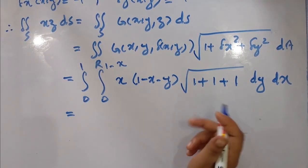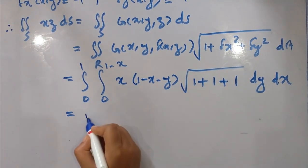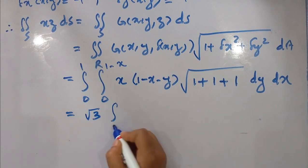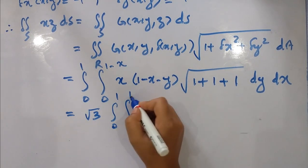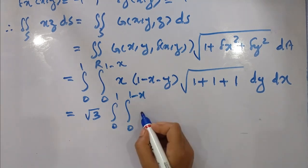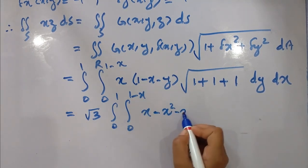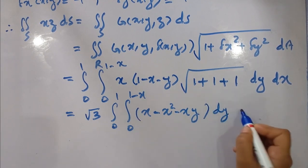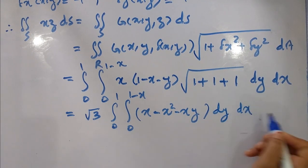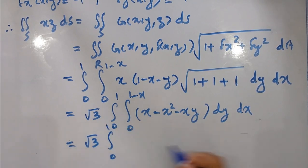Substituting, we get the square root of 1 plus (−1)² plus (−1)² equals square root of 3. So the integral becomes: square root of 3 times the integral from 0 to 1 integral from 0 to 1 minus x.